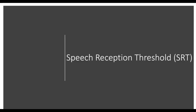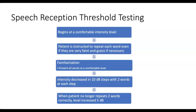The speech reception threshold, or SRT, is a threshold measure — the lowest level they can repeat back words or point to pictures. It uses two-syllable words: baseball, hot dog, airplane, cupcake. You usually start at a comfortable intensity, around 35–45 dB, familiarize them with the words, then reduce in 10 dB steps until they don't hear it anymore. You go up until they hear it and then back down — that bracketing approach.